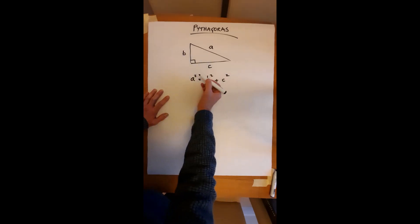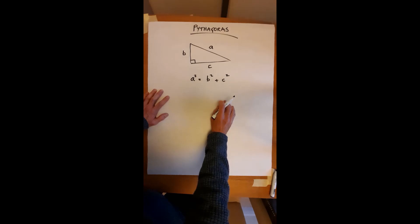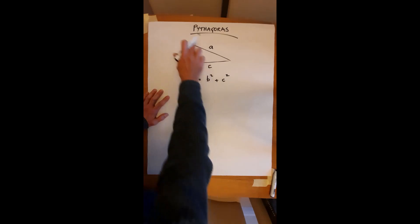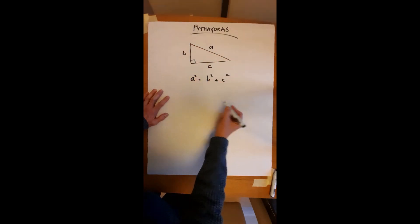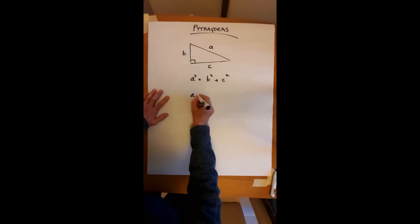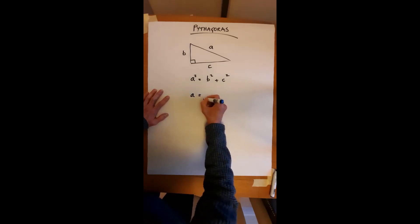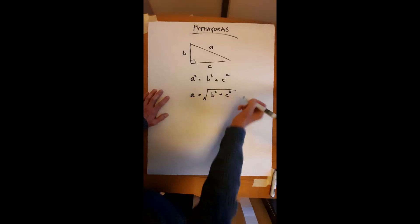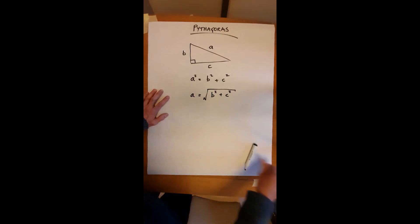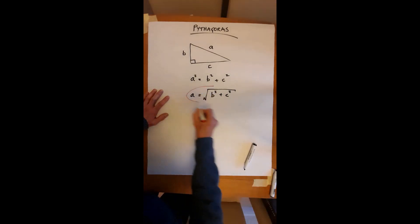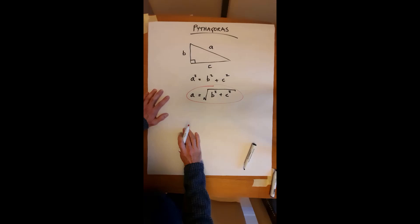So we tend to take this and we change it so we just find A. We can find the length of the hypotenuse. So A equals the square root of B squared plus C squared. So that is an important formula and I've highlighted that on your handout.